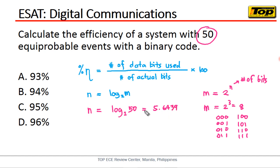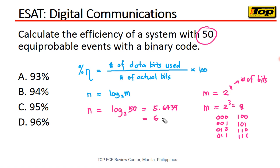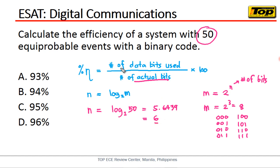This is the exact value, but of course there are no bits equal to 5.64, so we round up to 6. So 6 bits in total — this will be the actual bits. The actual bits equal 6, and the number of data bits used is 5.6439.